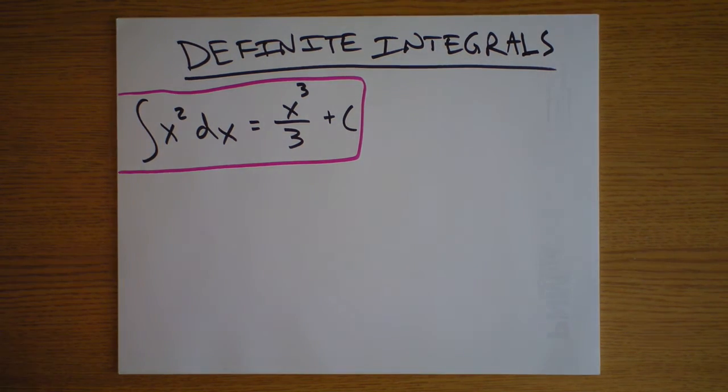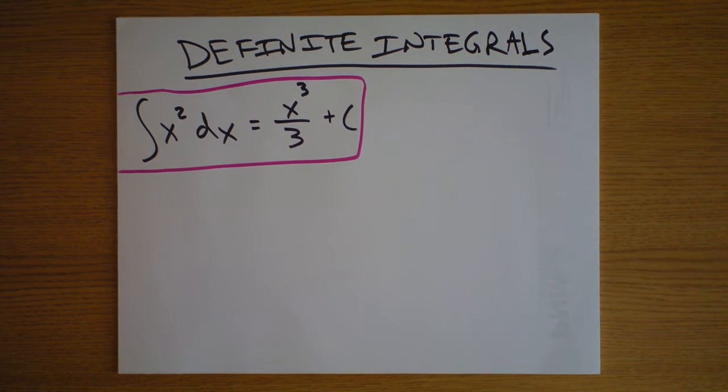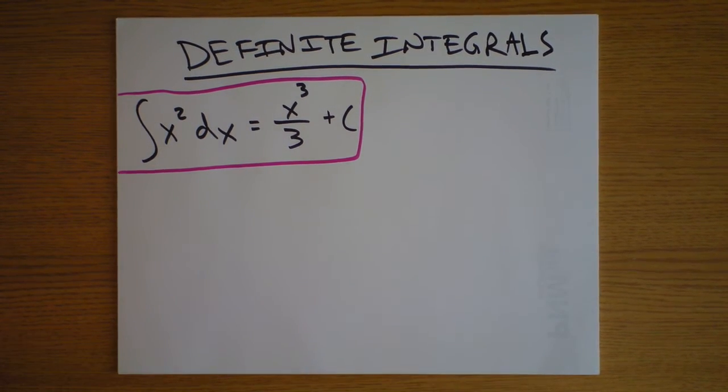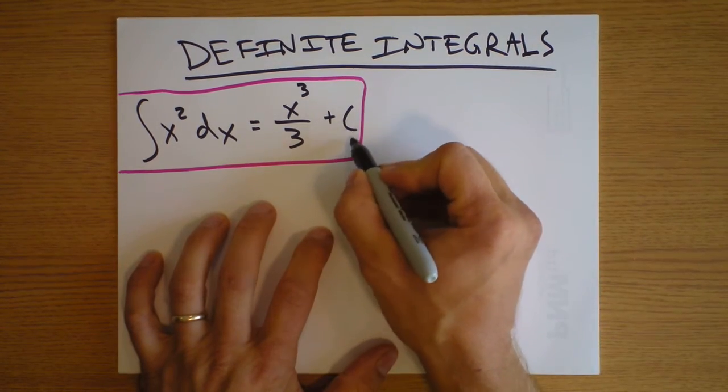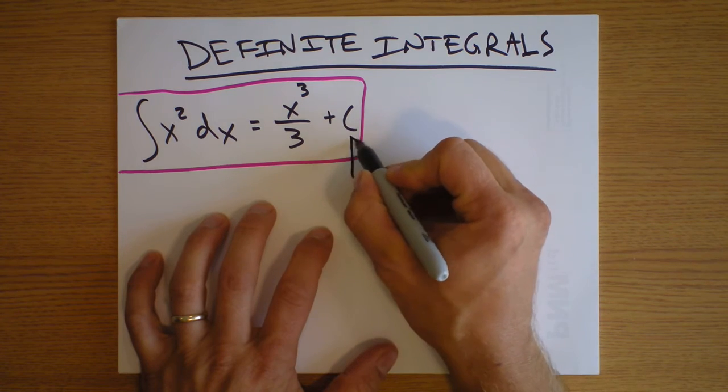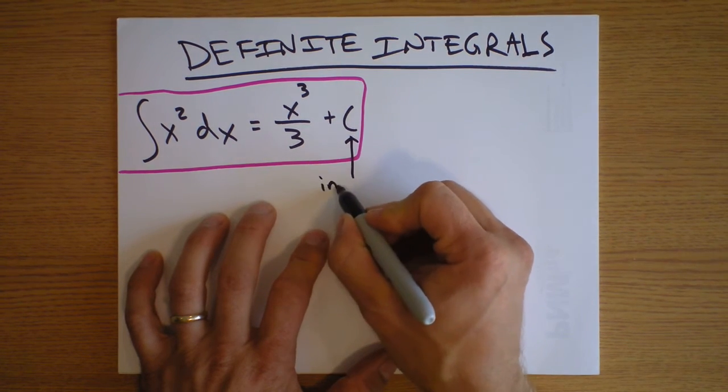But definite integrals have bounds, and you know the initial conditions and the final conditions, so we're looking at something that we can absolutely know without this crazy uncertainty, this uncertainty of initial conditions.